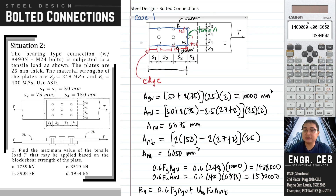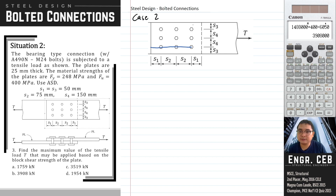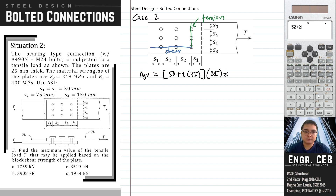We are not yet done because that was only case 1. For case 2, we consider a different block shear path with shear on one side and tension on another. For AGV in case 2, we do not multiply by 2: width is 50 + 2×75, times 25. AGV = 5,000 square millimeters.